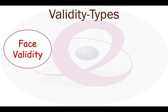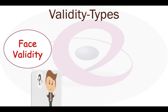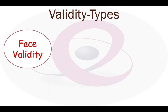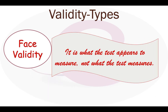When a test appears to measure what the test user or test constructor wishes or intends to measure, it is said to possess face validity. Face validity refers not to what the test measures, but to what the test appears to measure.